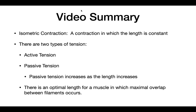In summary, we talked about how isometric contractions are contractions that occur in muscles where the length is constant. We also talked about the two types of tension — active and passive — and how the length of a muscle correlates with the force generated by a muscle. Thank you for watching this video, and I hope it helped you understand what isometric contractions are. See you next time.